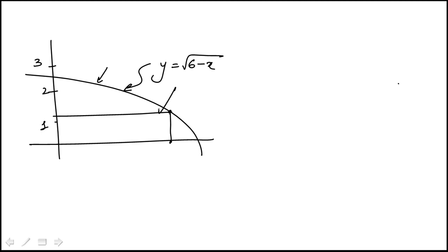Here we have a rectangle where one corner has to fall on this curve and the other one is at the origin. The question is: what's the maximum area of such a rectangle? I'm going to call this point A. The x-coordinate of that point is A, which means the y-coordinate would be square root of 6 minus A, based on this function.